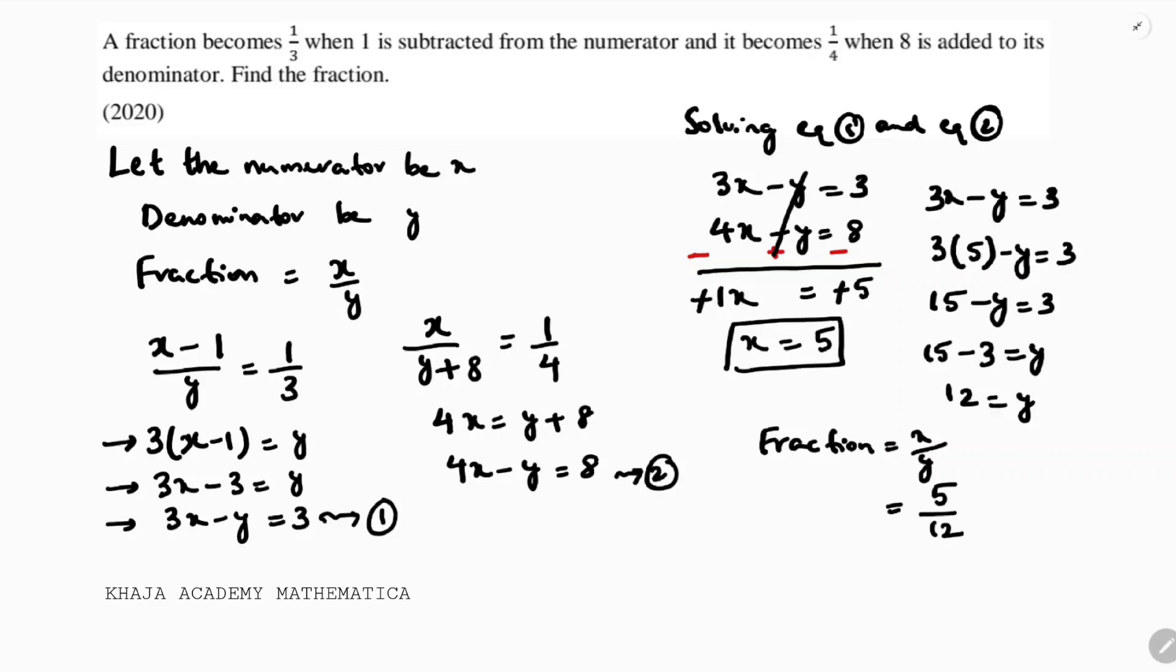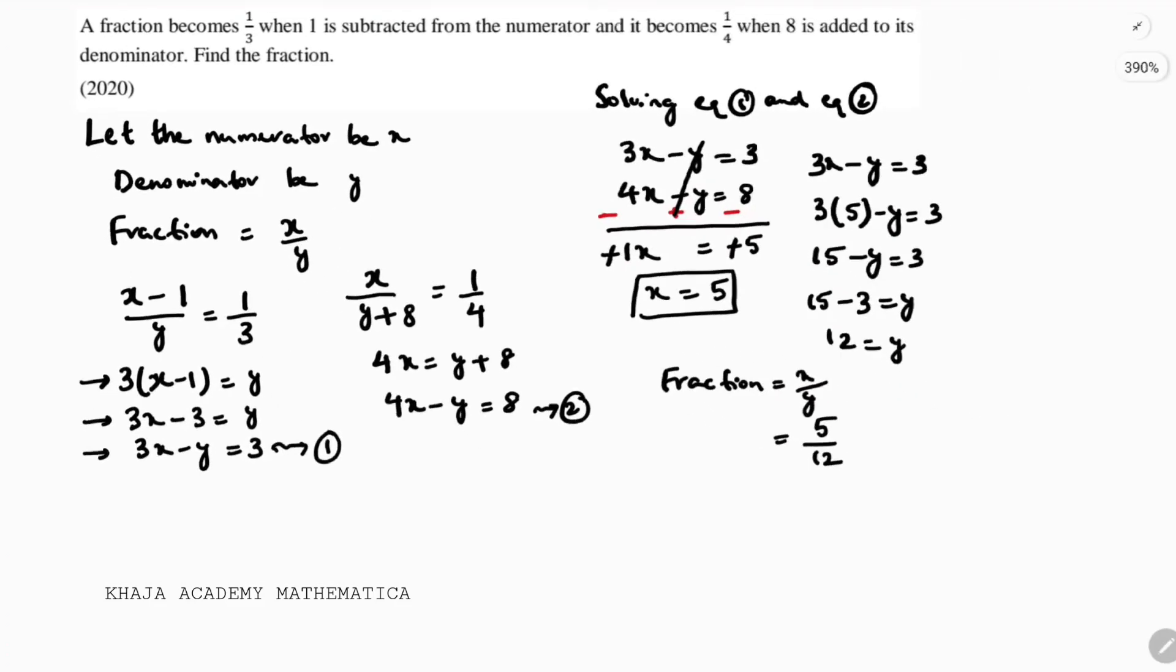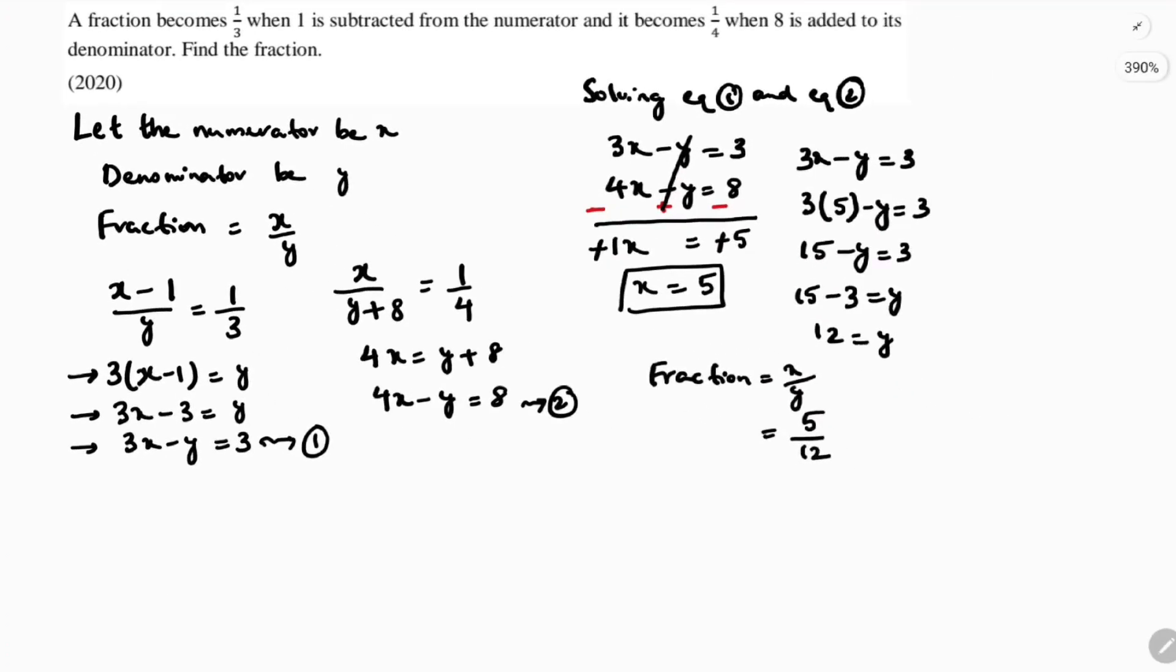Now see if you want you can check for this. It becomes 1 by 3 when 1 is subtracted from numerator. See from numerator, 5 minus 1 by 12, which is 4 by 12. So 4 times 1, 4 times 3, it will become 1 by 3.